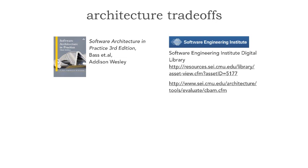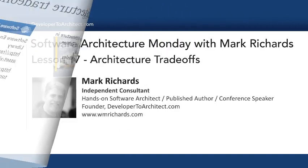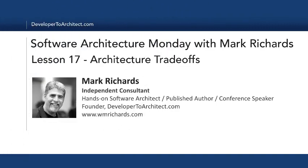In summary, I would encourage combining both ATAM and CBAM — assessing the trade-off analysis of architecture characteristics in conjunction with cost — and focusing on the goals, not necessarily the stringent overall process. Make it work how it works for you. This has been Software Architecture Monday, Lesson 17, Architecture Trade-Offs. Stay tuned next Monday where I'll have another lesson for you. Thank you very much.